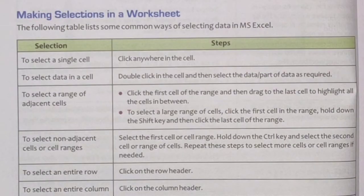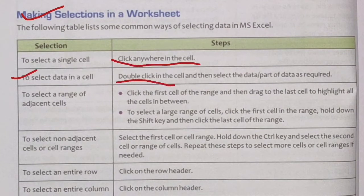We can select a single cell. If we want to select a single cell, click anywhere in the cell. To select data within a cell, double-click in the cell.